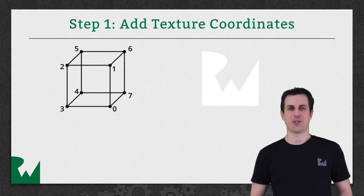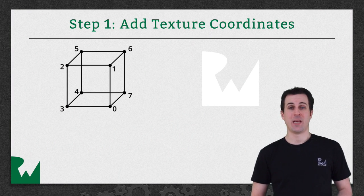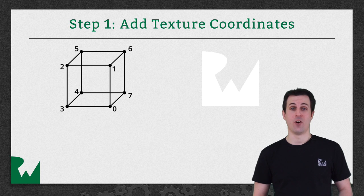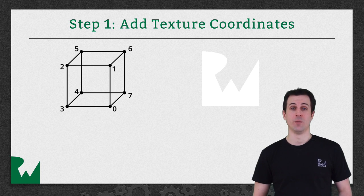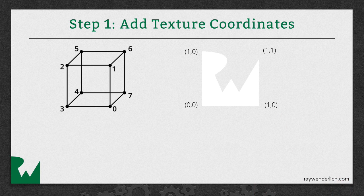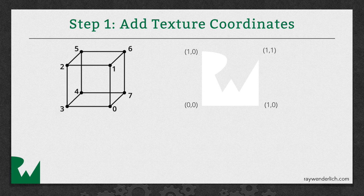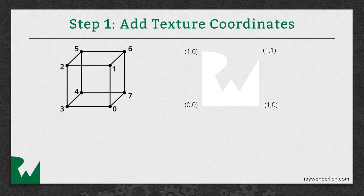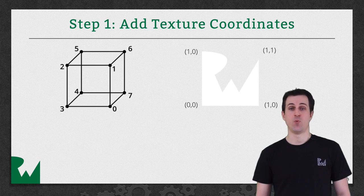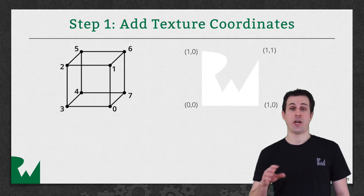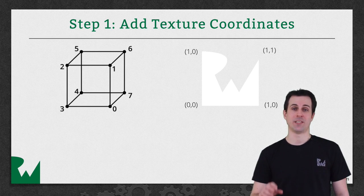The first thing you need to do is add texture coordinates to your object. This enables you to configure how your texture is oriented on your geometry. So for example, say we want the RW logo to show up as you see it here on the front face of this cube. Well, we'd simply make a mapping that says vertex 3 should be the lower left of the texture, vertex 0 should be the lower right of the texture, vertex 1 should be the upper right of the texture, and vertex 2 would be the upper left of the texture. And if you want it to be on its side instead, you could just change the texture coordinates around to make it go on its side.